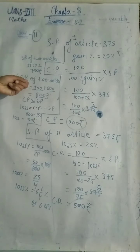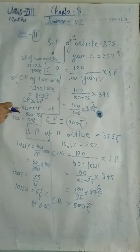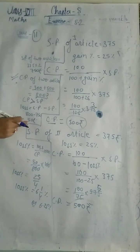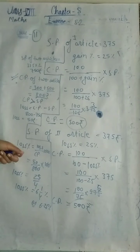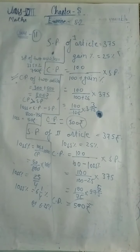Since CP (Rs. 800) > SP (Rs. 750), there is a loss. Loss = 800 − 750 = Rs. 50. Loss percentage = (50 / 800) × 100 = 25/4 = 6¼% or 6.25%. This is the answer for question number eleven.